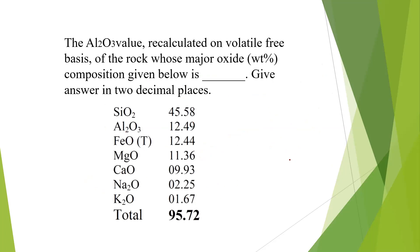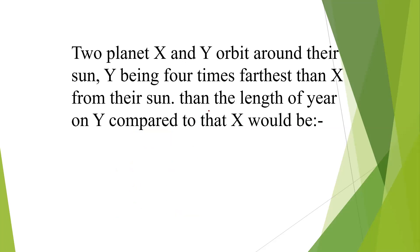Next question: planets X and Y orbit around their sun, with Y being four times farther than X from their sun. Then the length of year on Y compared to X would be what?